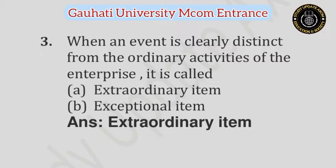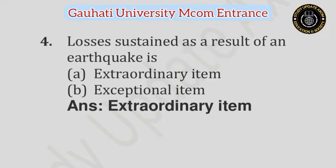Question number 3: When an event is clearly distinct from the ordinary activities of the enterprise, it is called — Option A: Extraordinary Item, Option B: Exceptional Item. Answer is Extraordinary Item. Question number 4: Losses sustained as a result of an earthquake is — Option A: Extraordinary Item, Option B: Exceptional Item. Answer is Extraordinary Item.